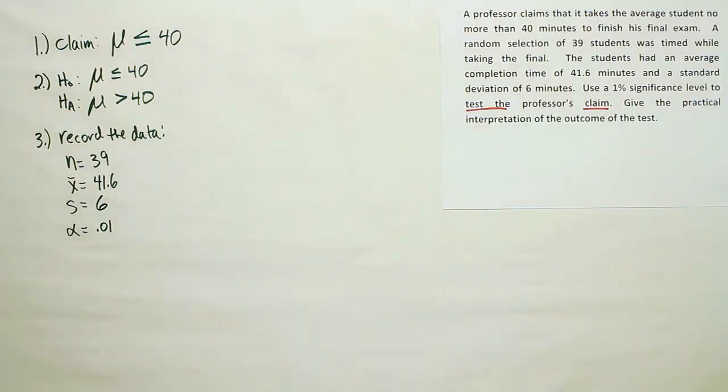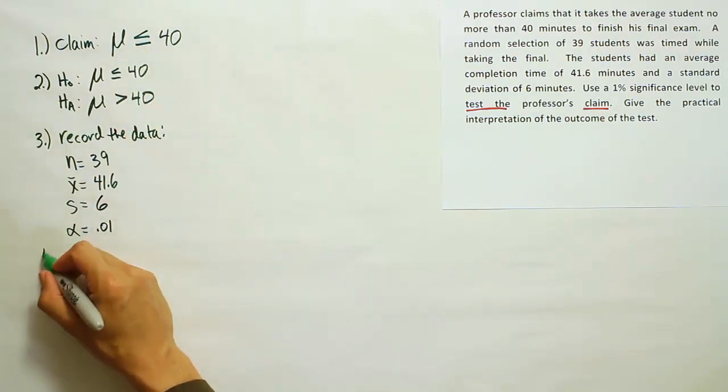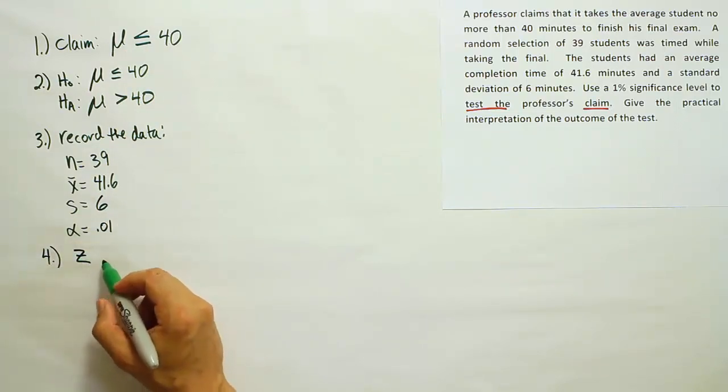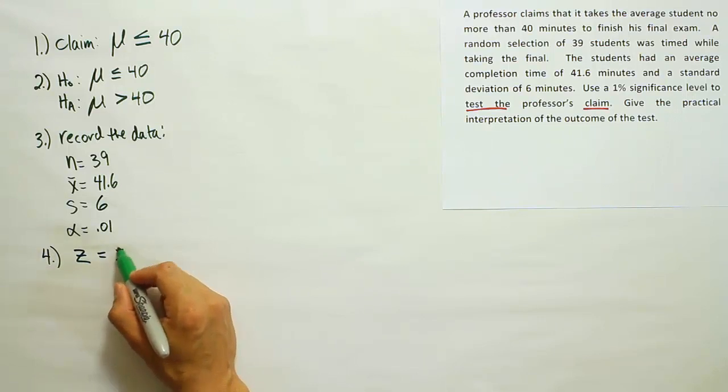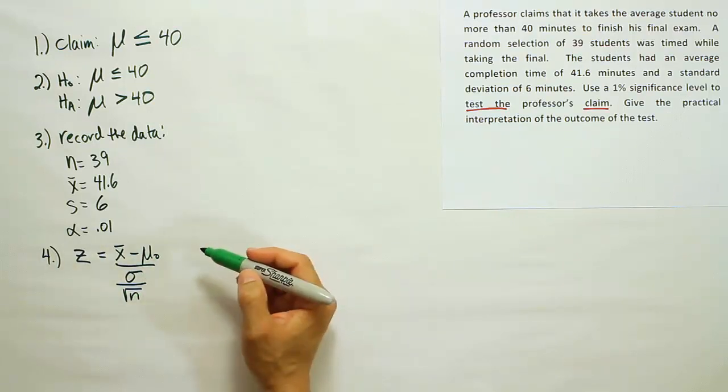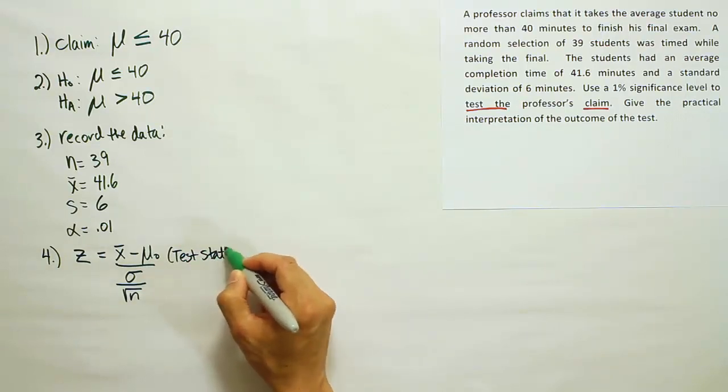You've recorded the data. Now we have to put the data into our test stat formula. So, when you're doing a hypothesis test about the mean, and the sample size is large, we're going to go ahead and use the Z test stat formula. So the Z test stat formula is going to be X bar minus mu sub 0 sigma divided by the square root of N. Remember, that's our test statistic.